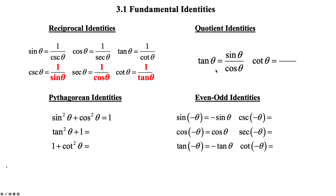Quotient identity: tangent theta equals sine theta over cosine theta. Cotangent theta, flip it, equals cosine theta over sine theta. Your main Pythagorean identity: sine squared theta plus cosine squared theta is equal to 1.